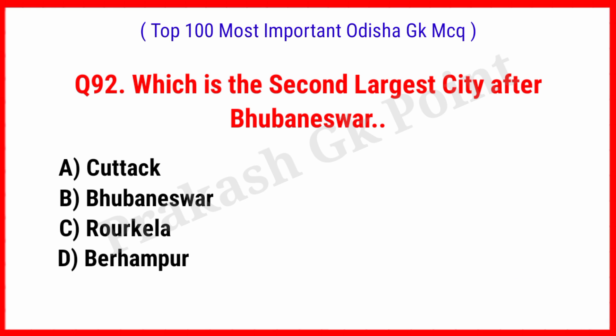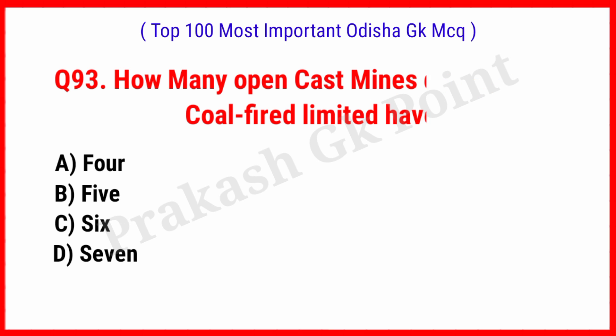Which is the 2nd largest city after Bhubaneswar? Answer: Option A, Cuttack, 192.5 square kilometers. How many open-cast mines does Mahanadi Coalfields Limited have? Answer: Option D, 7.